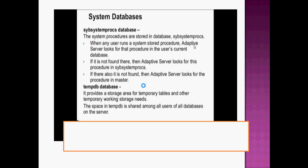The Sybase system processes database is used for handling the processes which are scheduled in the operating system or in the database system. A procedure is essentially a task given to the server by the client. This database is basically for handling process operations.